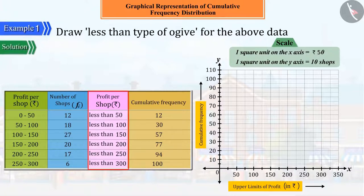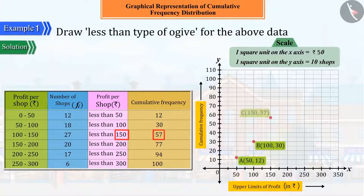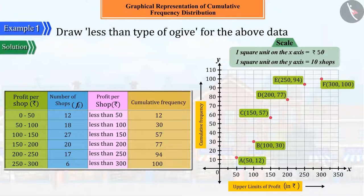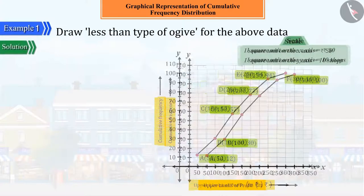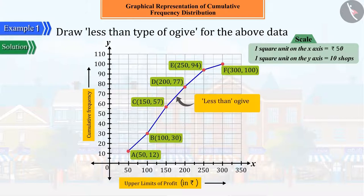Let us now plot the corresponding points A, B, C, D, E, and F of ordered pairs obtained from all these upper limits and corresponding cumulative frequencies, and join all these points carefully. The curve so obtained is called the less-than cumulative frequency curve, or ogive.